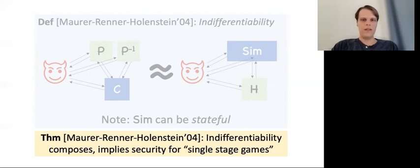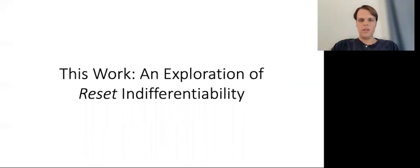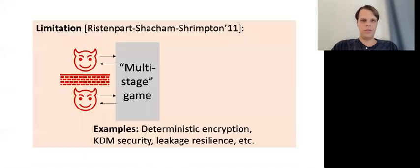With a major caveat that I will discuss in a moment, an indifferentiability proof shows that the hash function might as well be treated as a random oracle, provided we are willing to treat the underlying building block as an ideal object. So what this work is about is exploring a strengthening of indifferentiability called reset indifferentiability, which is needed to overcome a significant limitation in plain indifferentiability. Concretely, as observed by Ristenpart, Shacham, and Shrimpton, indifferentiability is insufficient for what are called multi-stage games.